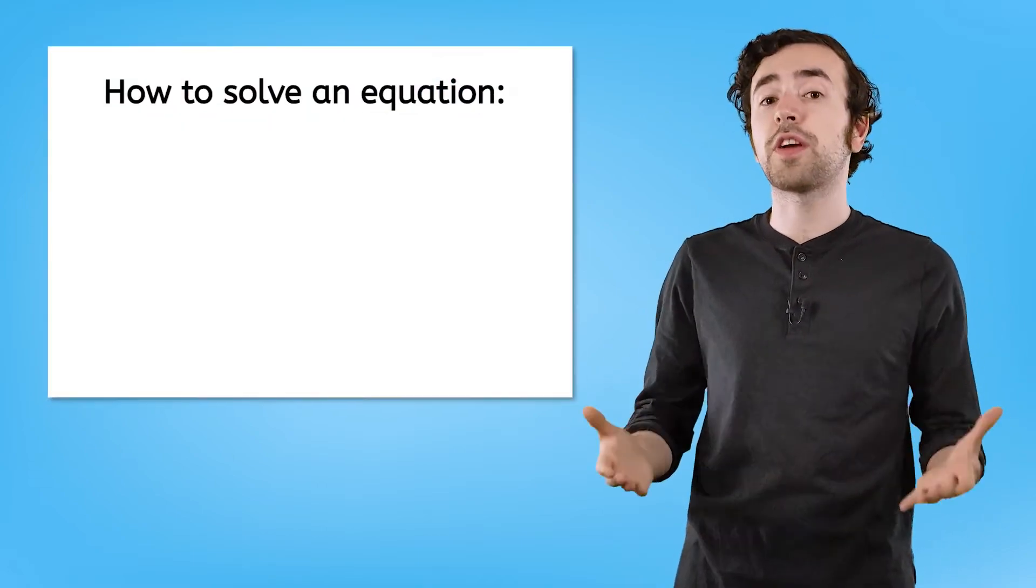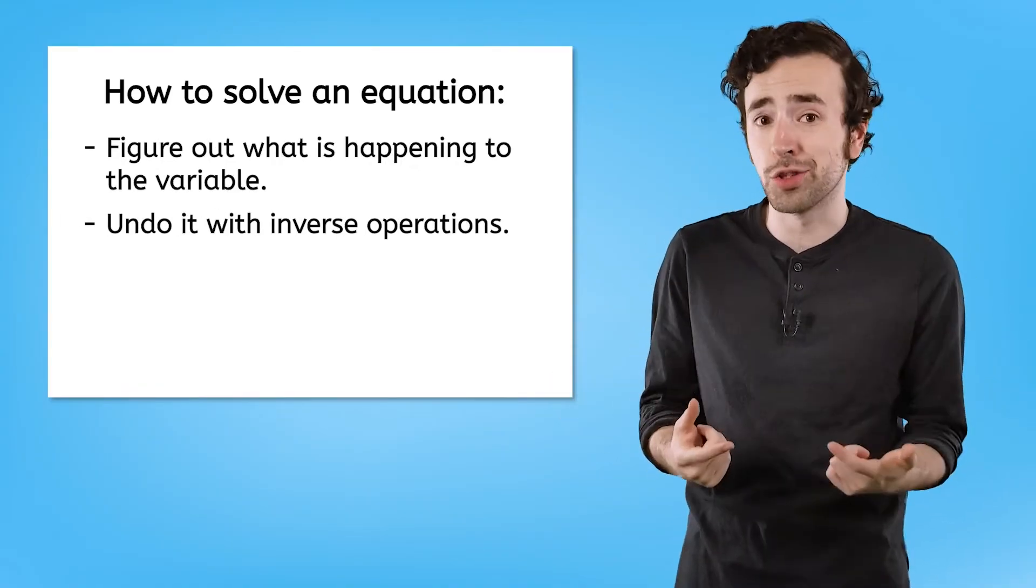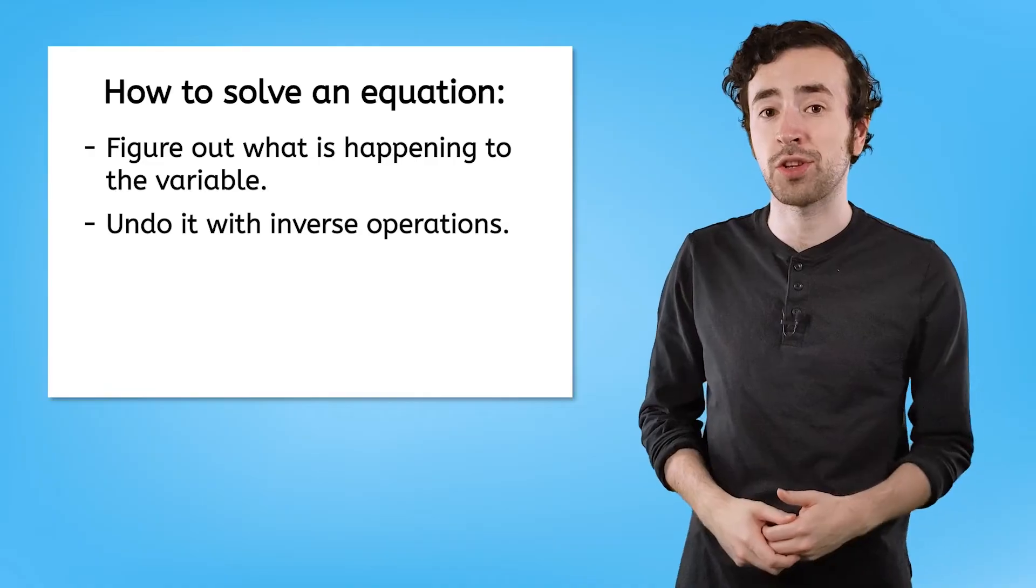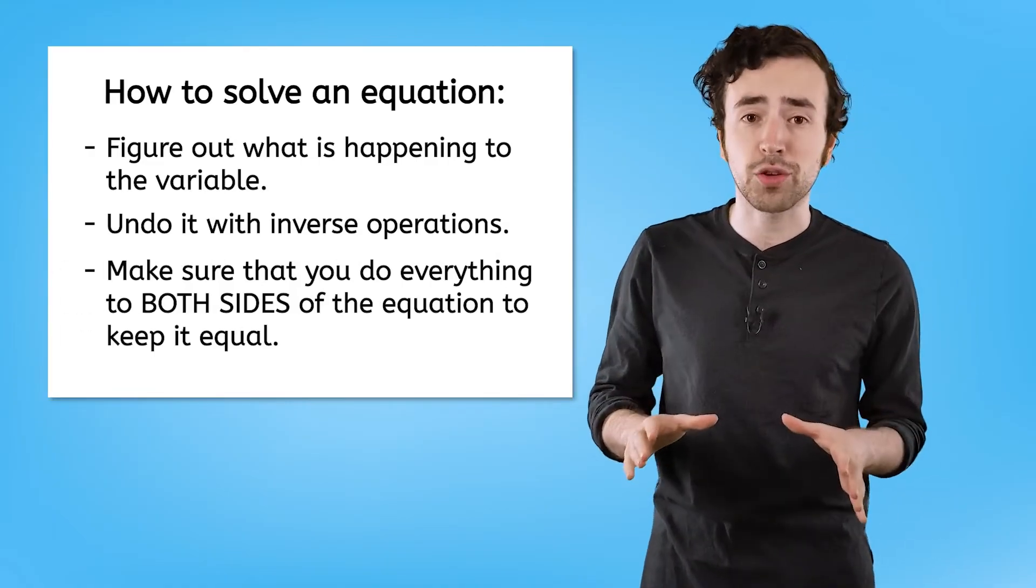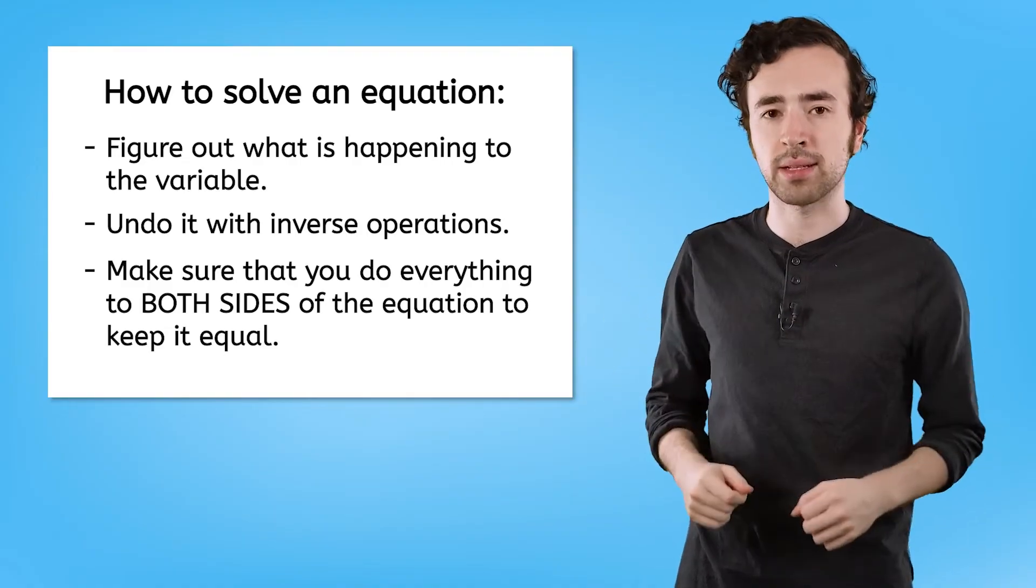Let's recap what we've discovered so far. When we are faced with an equation, we want to figure out what's happening to the variable so that we can undo it with inverse operations. And we have to make sure that we do everything to both sides of the equation to keep it equal and balanced.